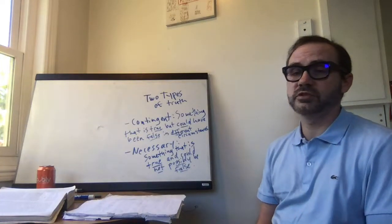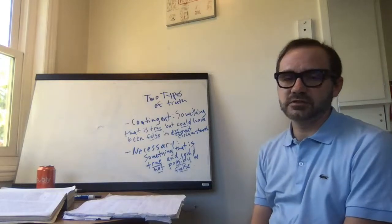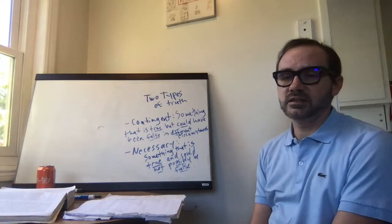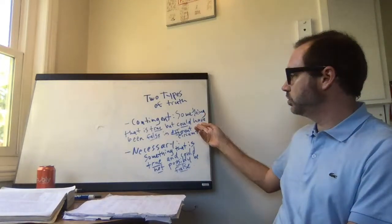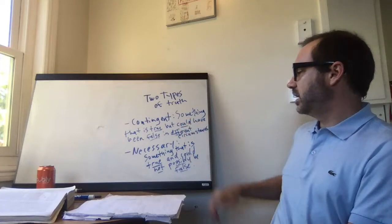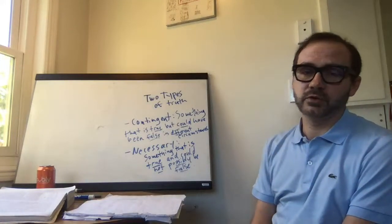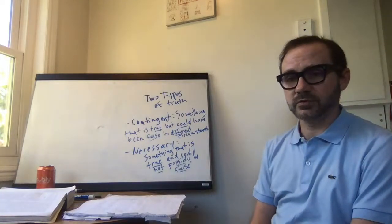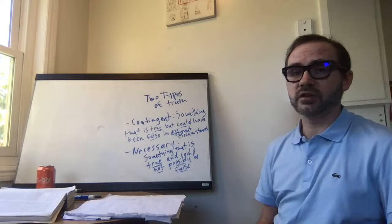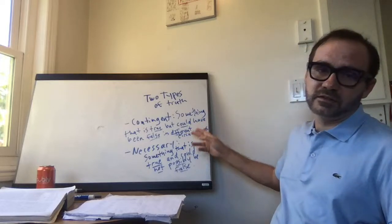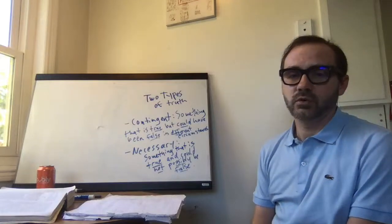So, the distinction between contingent and necessary truths: back to our principle of sufficient reason — it says that if something's a positive truth, there has to be a cause for it. And that principle has a specific application to the contingent truths. These are things that are true, and since they could have been false, the principle of sufficient reason indicates that there had to be some cause that caused them to be true as opposed to false. The principle of sufficient reason is deeply rooted in common sense — everything has to have a cause. Contingent truths are the type of things that say something exists or some event happened, and those are the things that must have a cause, an explanation, or a reason.